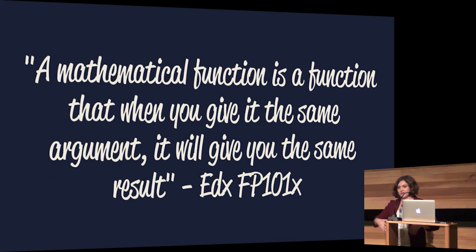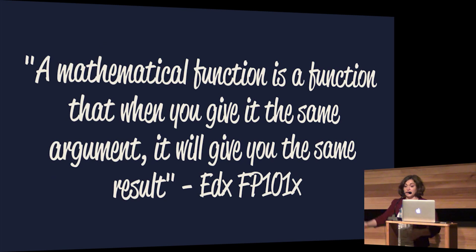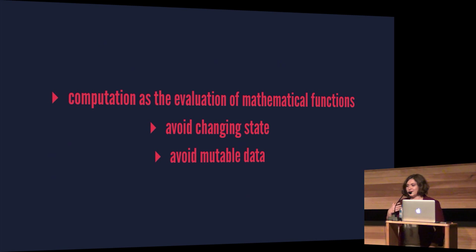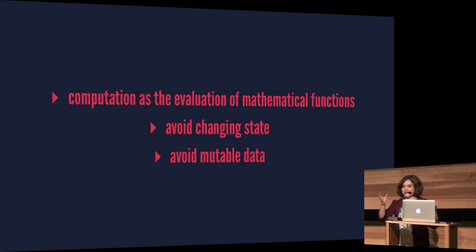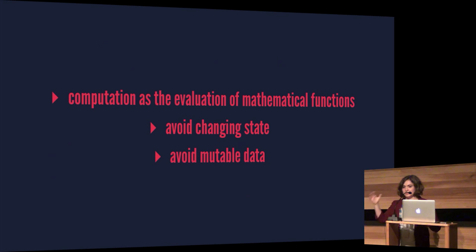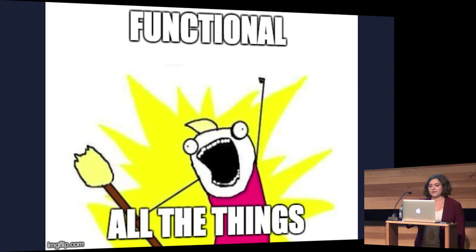The only way a function can have an effect on the world is if something uses its return value. On its own, it's very self-contained — it gets an input, does something, gives you an output. As people talk today, keep in mind these three points from the Wikipedia definition. When things get complicated, it's okay — you start learning the basics and high-level concepts and you end up understanding more and more. The three things to remember: mathematical functions with input and output that are self-contained, avoiding changing state, and avoiding mutable data.